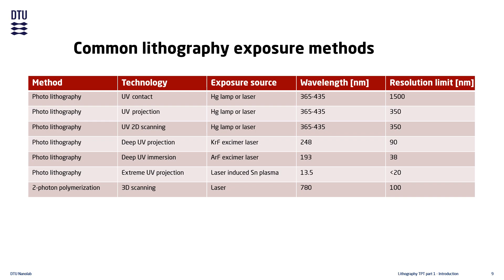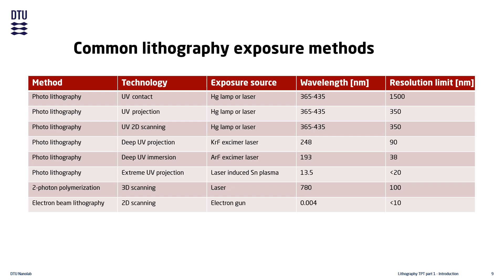The minimum resolution of two-photon polymerization depends on how small the focal point, known as the voxel, can be made. The next method is electron beam lithography, which uses an electron beam as the exposure source. The electron beam is scanned across the substrate using the same technique as in scanning electron microscopy. The minimum possible resolution for this method is mostly dependent on how small you can make the diameter of the electron beam and how closely you can place each beam shot.